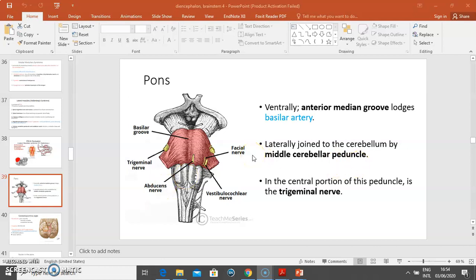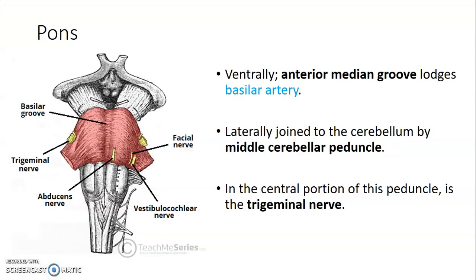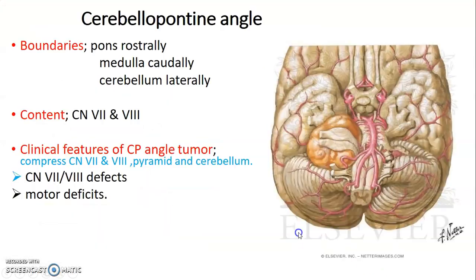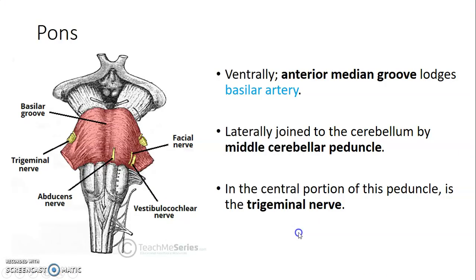Hi everybody, my name is Dr. Minden and I'm going to continue with the series on the brainstem. We had already discussed the medulla oblongata and now I'm going to discuss the pons. From this picture you can appreciate the pons — that maroon or pink region — that's the pons.